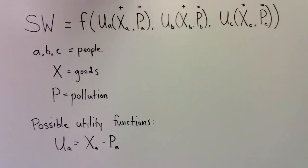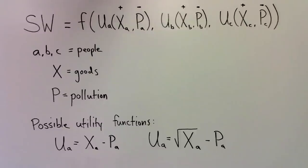Another description of A's utility might be given by the following equation: U equals the square root of X minus P. Here A's utility is still increasing with consumption, but the marginal utility of consumption is declining.